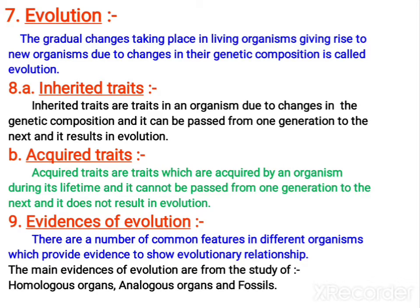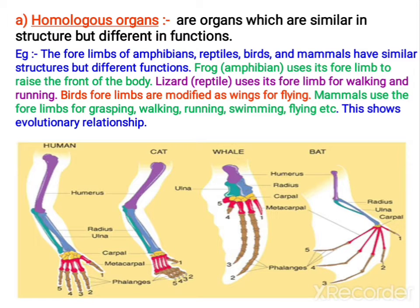Next, let us study regarding the evidences of evolution. There are a number of features in organisms, and by studying those features we can find the evolutionary relationship. The evidences we can get include homologous organs, analogous organs, fossils, and embryonic evidence — so many are there. Today let us study regarding homologous organs and analogous organs.